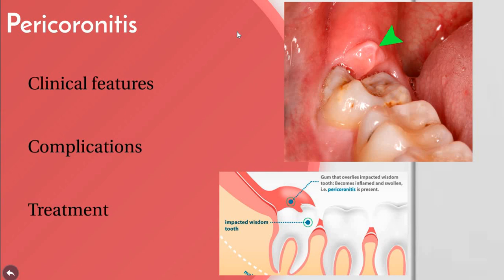Treatment of acute pericoronitis depends on the severity of inflammation, systemic complications, and whether to retain the involved tooth. The treatment decision involves whether to retain the tooth or extract it, and whether to use a blade or laser. A persistent symptom-free pericoronal flap should also be removed as a preventive measure against subsequent acute involvement.